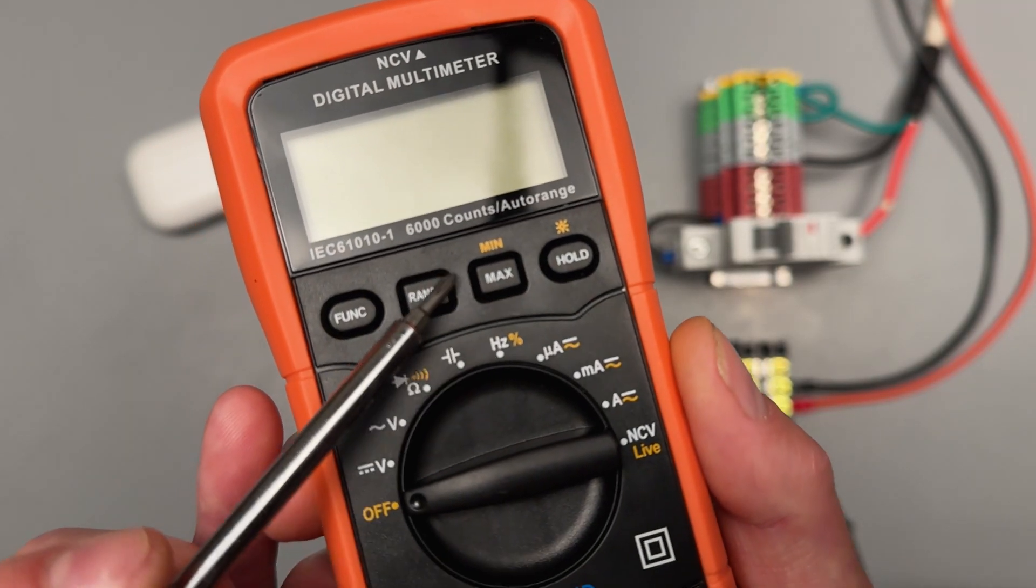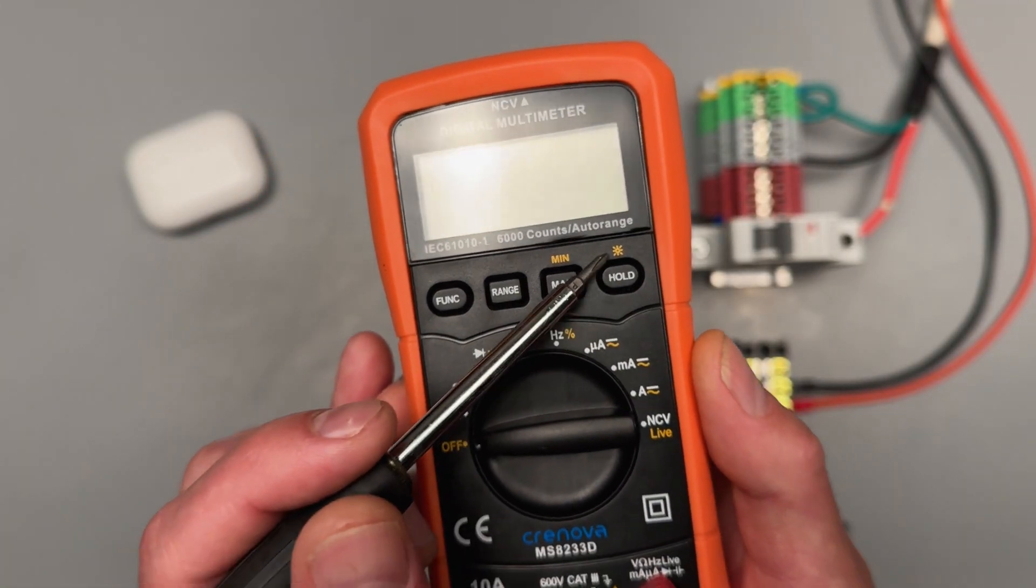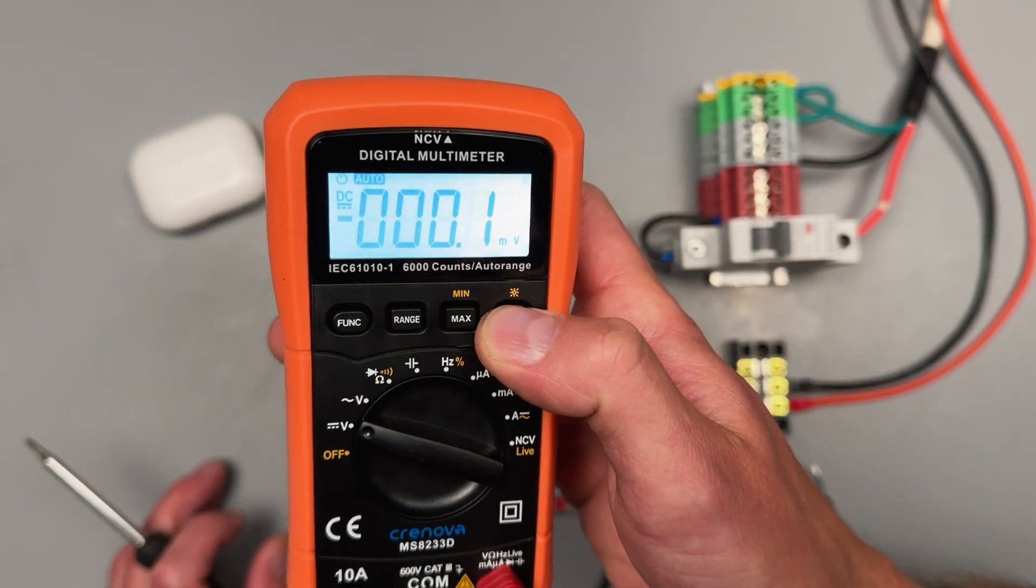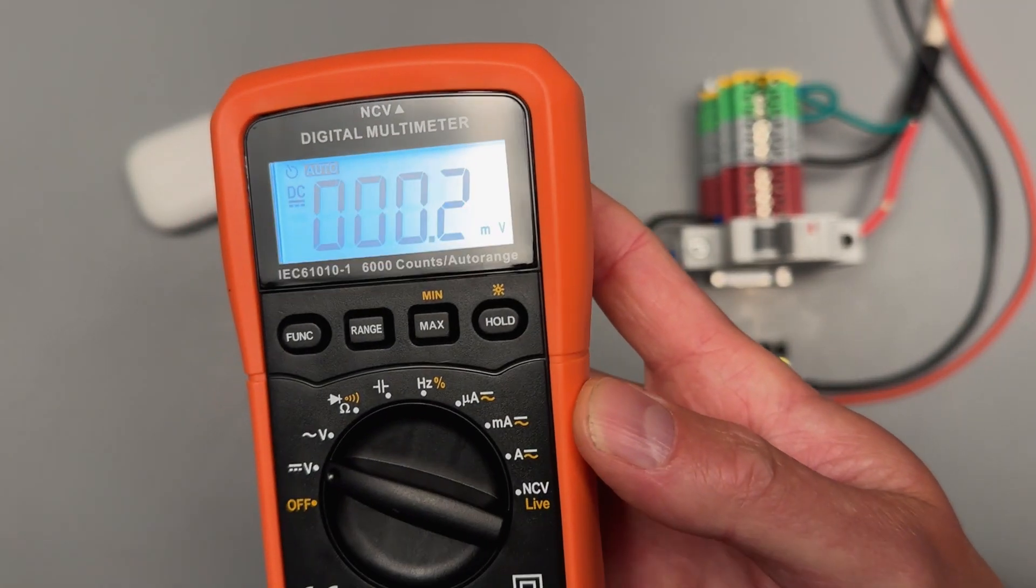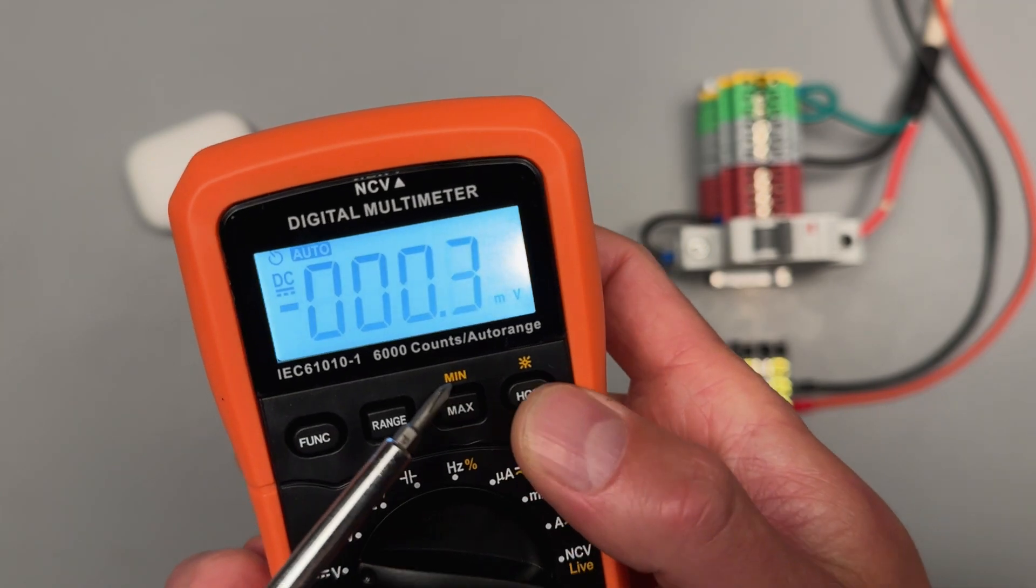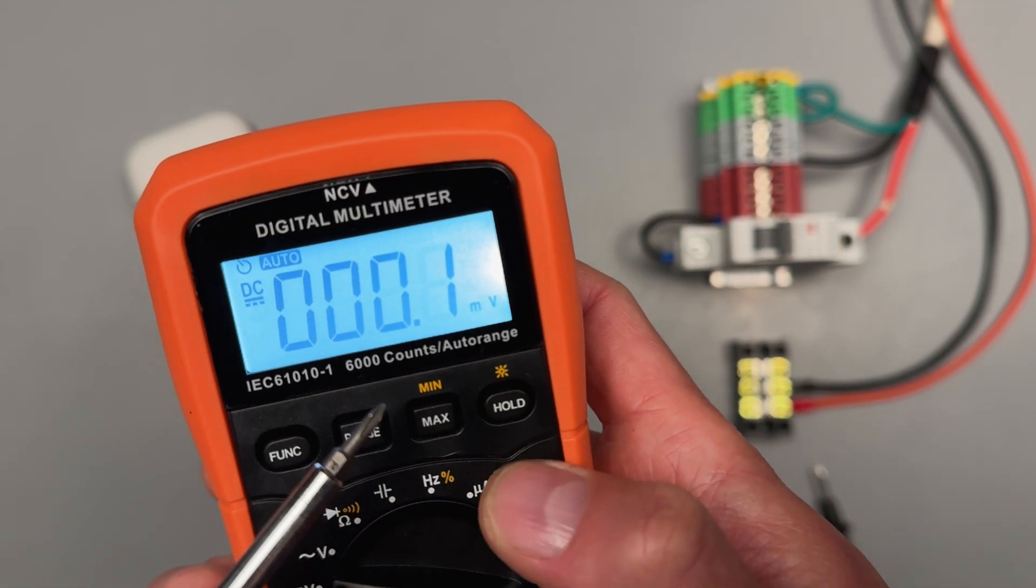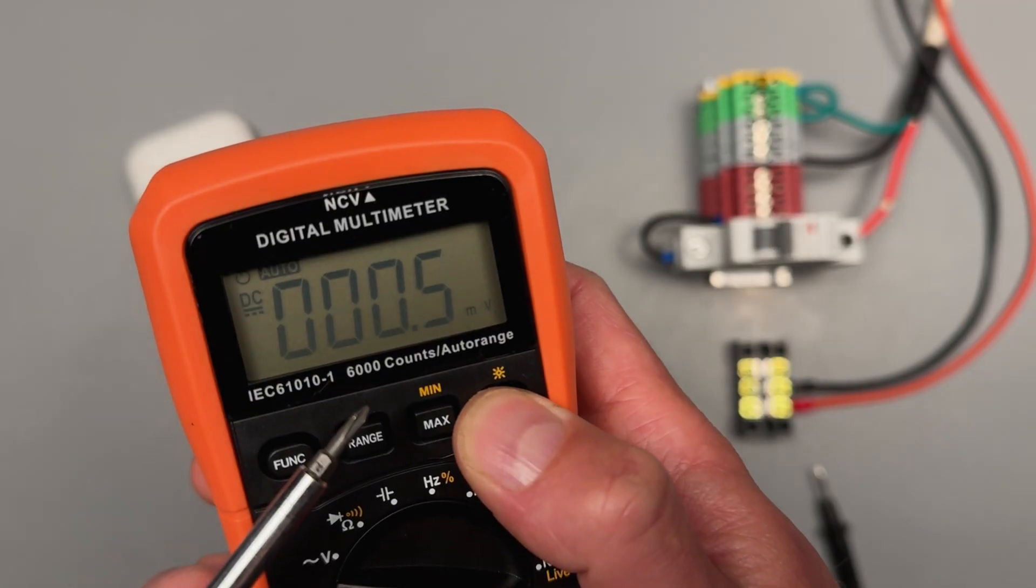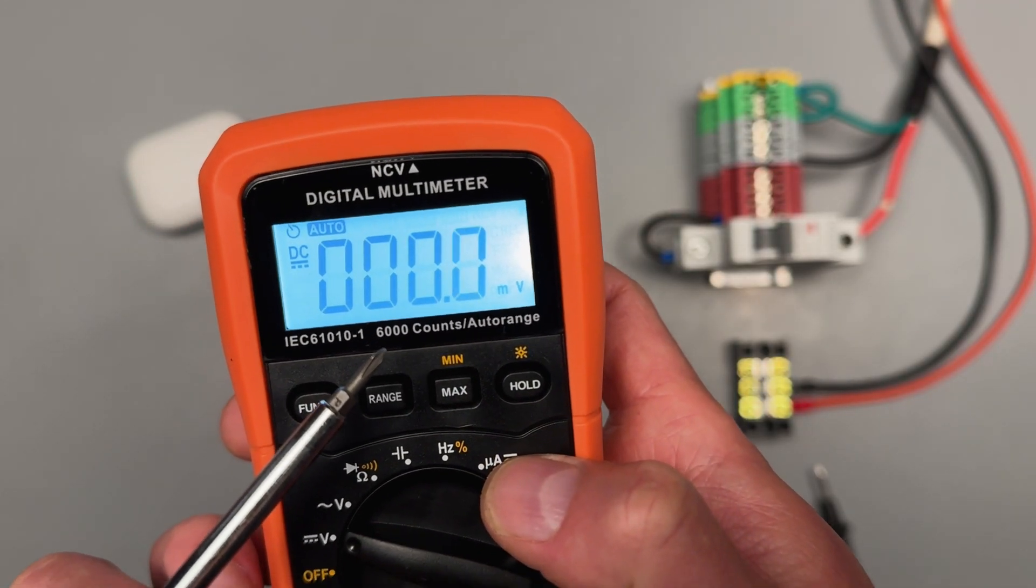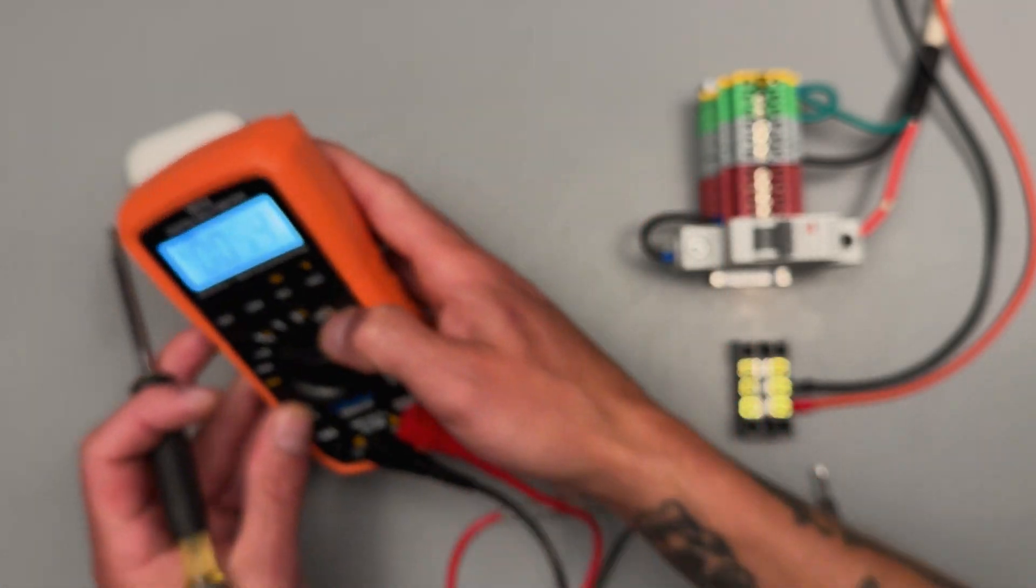Honestly, I almost never use these functions on a meter, but they're there if you need them. And then, of course, it's got a backlight. To engage the backlight, you'll want to just go ahead and hold the backlight button, which is confusing because there's the hold, which is to hold your measurements, which is just a quick brief press. And then to hold it is to turn on and off the backlight. So I wish there was a little bit better communication of that function there, but that's how you're going to go ahead and work that.